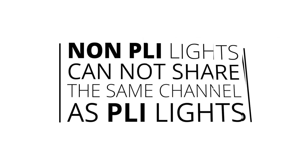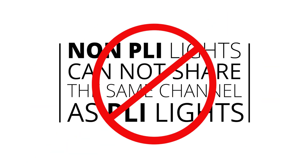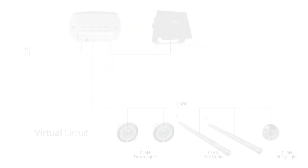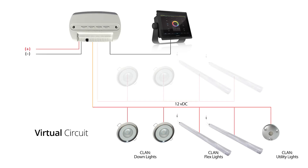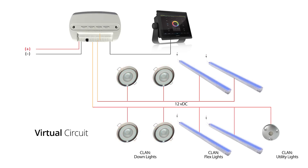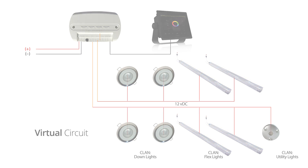It is important to note that non-PLI lights cannot be placed on the same channel as PLI lights. Non-PLI lights will require a dedicated channel. However, multiple light plans across multiple channels can be programmed to be triggered by a single virtual switch command through the POCO interface.